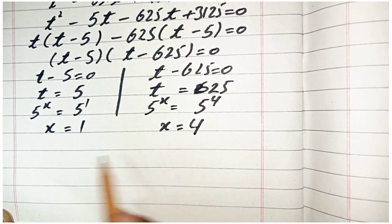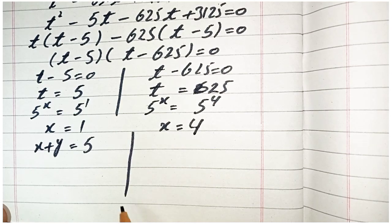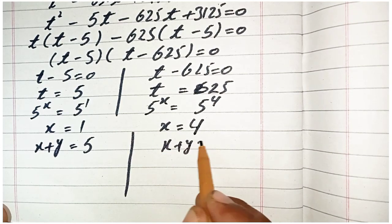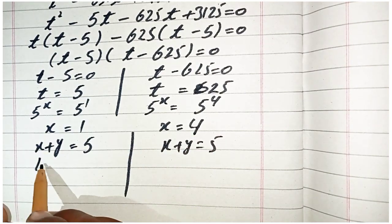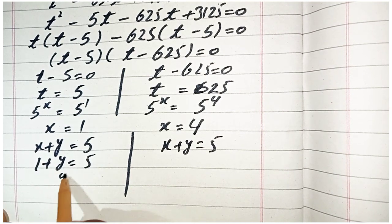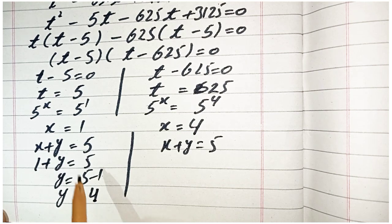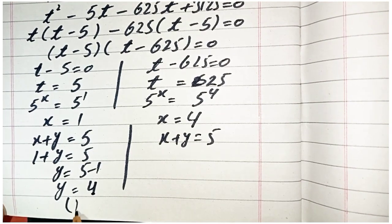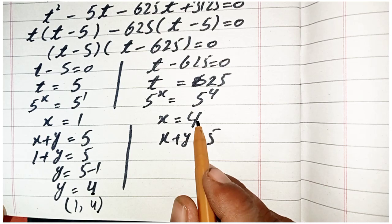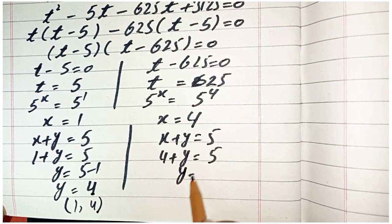Recalling the second equation x plus y equals 5, we put the value of x. For x equal to 1: 1 plus y equals 5, so y equals 4. For x equal to 4: 4 plus y equals 5, so y equals 5 minus 4, giving y equal to 1.